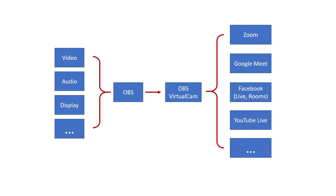OBS collects all those sources and compiles them into one stream. However, it's not going out anywhere until you have the second piece of software installed: OBS Virtual Cam. It's important to install them in the right order — first download and install OBS, then download and install OBS Virtual Cam. That allows OBS, a piece of software, to behave like a camera and feed the camera input into whatever tool you're going to use.